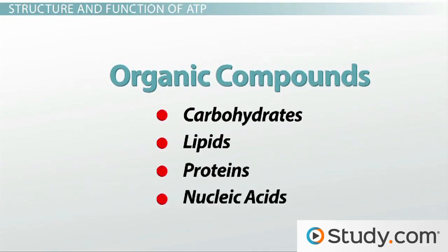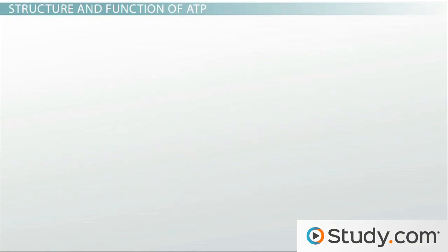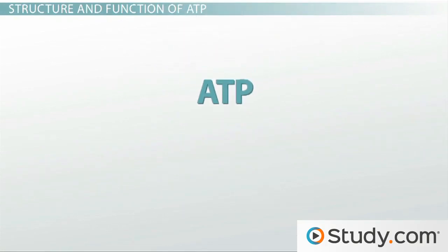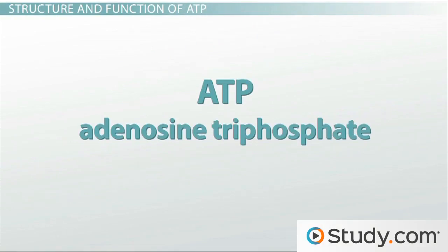Nucleic acids are also organic compounds, but they don't come from food, so we won't worry about them right now. These chemical compounds have energy stored in their bonds that your body wants and needs. So your body needs to extract that energy and turn it into a usable form. That usable form is the molecule ATP, or adenosine triphosphate.